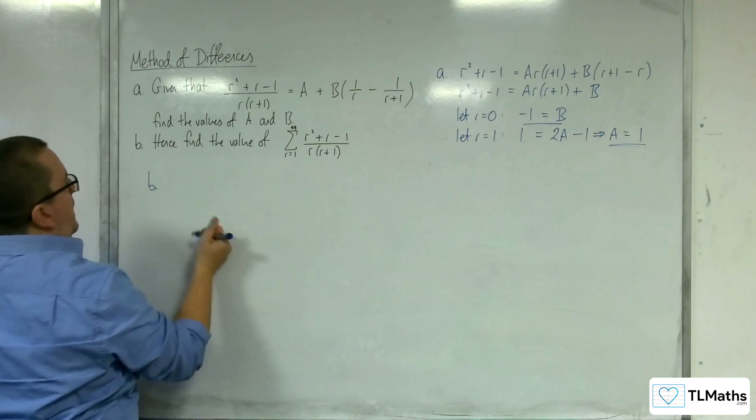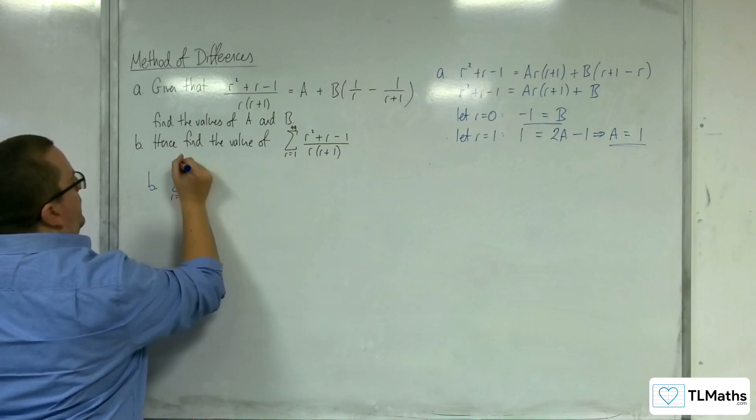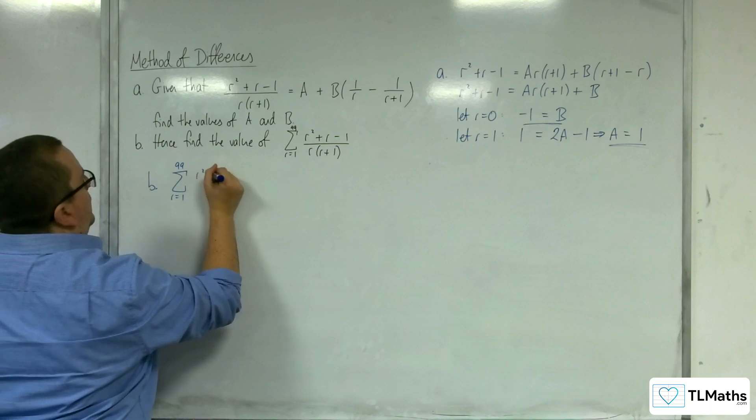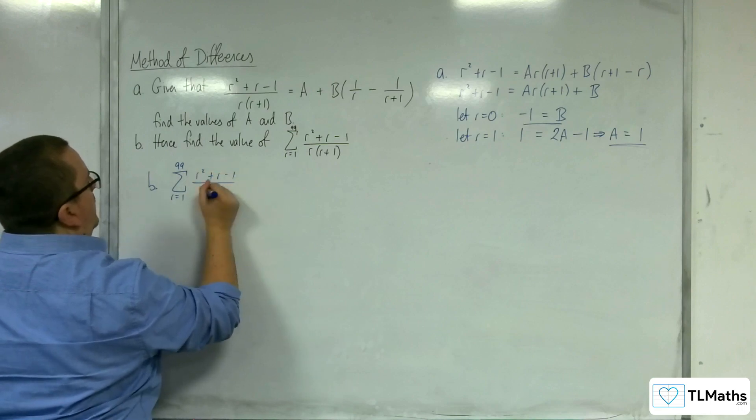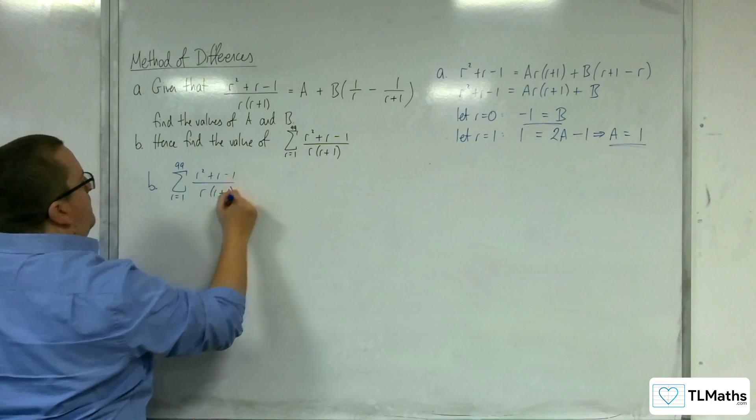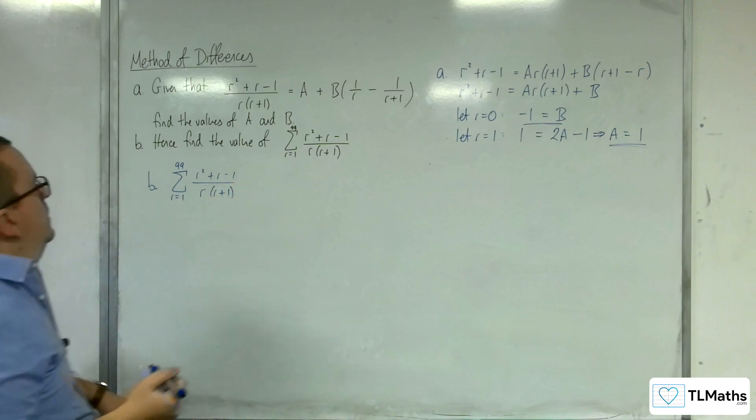So hence, find the value of this. So the summation from r is 1 to 99 of r squared plus r minus 1 over r(r plus 1).